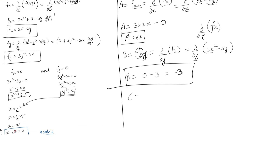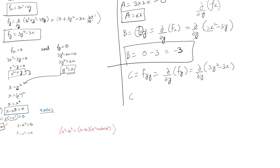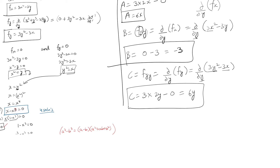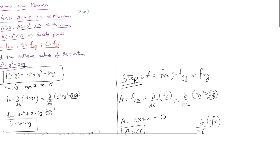c = fyy = d/dy of fy = d/dy of (3y² − 3x): 3y² differentiates to 6y, and 3x is constant so it gives zero. Therefore c = 6y.